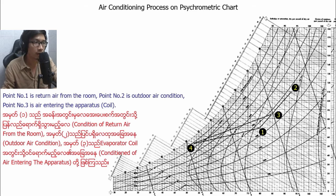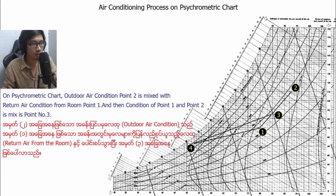Point number one is return air from the room. Point number two is outdoor air condition. Point number three is air entering the apparatus. On the psychrometric chart, outdoor air condition at point two is mixed with return air from the room at point one, and the condition of point one and point two mixed is point number three.